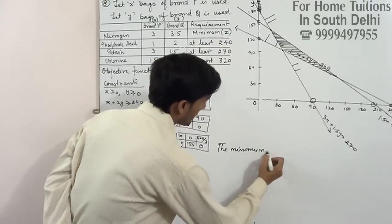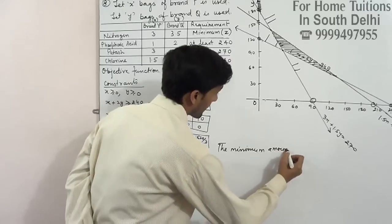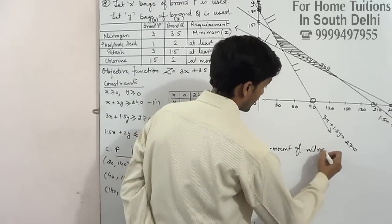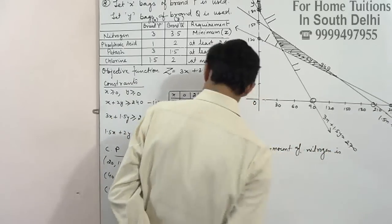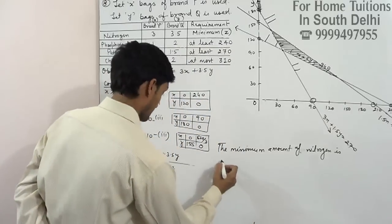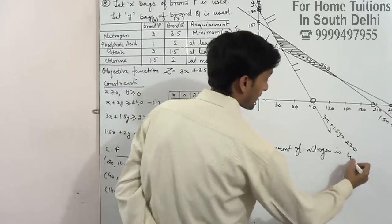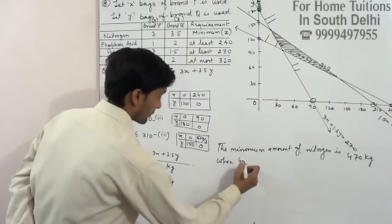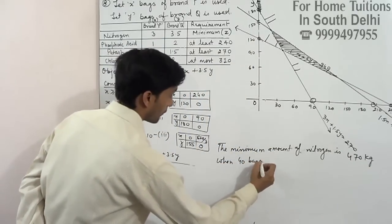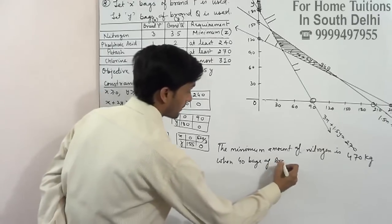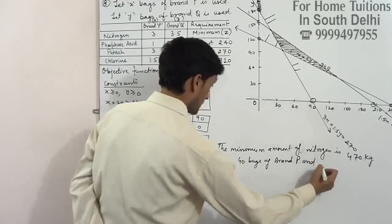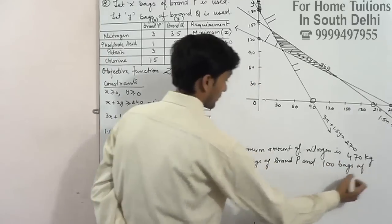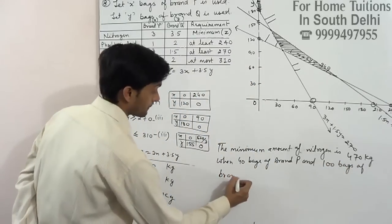Minimum amount of nitrogen is 470 kg. 470, when 40 bags of brand QR are used, and 100 bags of brand QR are used.